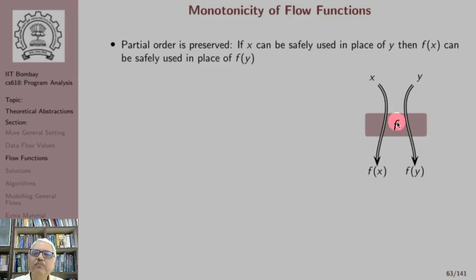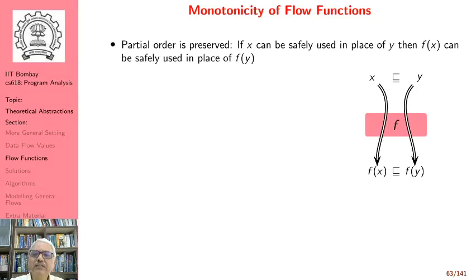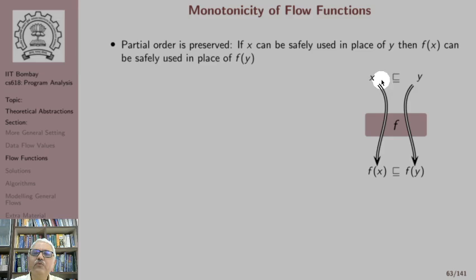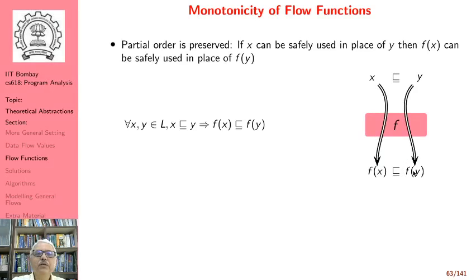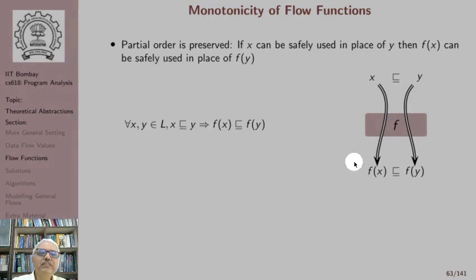Formally, we have two inputs X and Y and we are computing F(X) and F(Y) by propagating these values as input to this flow function F. In case it so happens that X is weaker than Y, then monotonicity guarantees that F of X is weaker than F of Y — meaning smaller inputs will produce smaller output compared to a larger input, which will produce a larger output. Mathematically, a flow function F is monotonic if for all X, Y in L, X weaker than Y implies F of X is weaker than F of Y.